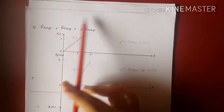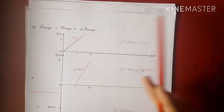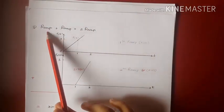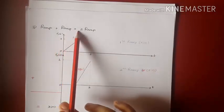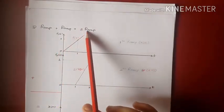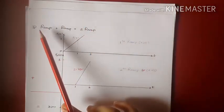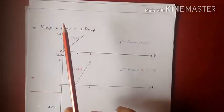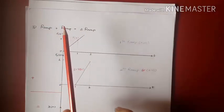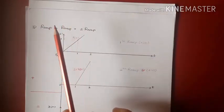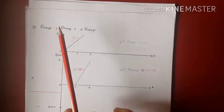The third trick: ramp plus ramp gives me 2 ramp. That means addition of two ramp signals gives another signal that is also ramp in nature, but the slopes of the ramp signals will be added. For a ramp signal, what matters is always the slope, which is often denoted as a coefficient beside the mathematical representation of the signal.